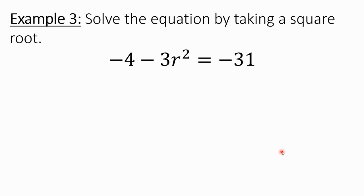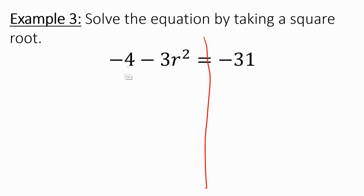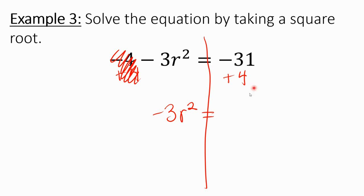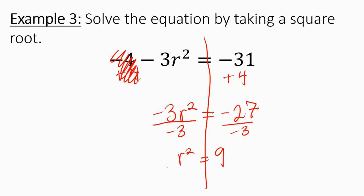Example 3: solve the equation by taking a square root. We have negative 4 minus 3r squared equals negative 31. I need to get r squared by itself. There are two things on the same side as r squared: the negative 4 and the negative 3. I get rid of the negative 4 first by adding 4 to both sides, giving negative 3r squared equals negative 27. Then I divide both sides by negative 3, giving r squared equals 9. Taking the square root: r equals positive or negative 3.